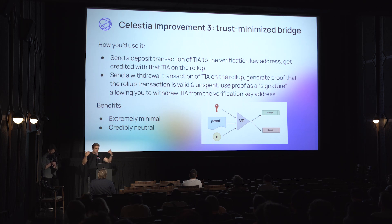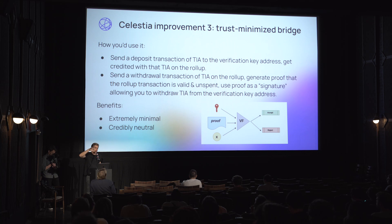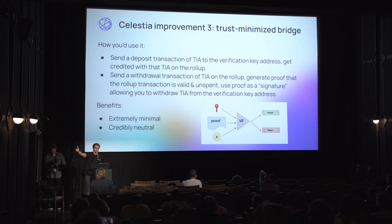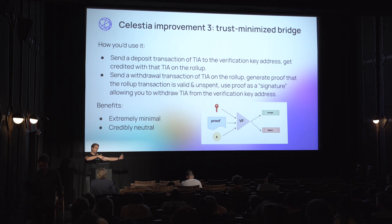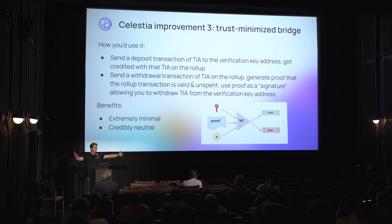In practice, you would send a deposit transaction of TIA to the wallet associated with the verification key, and the rollup would credit you Celestia tokens on the rollup. From there you can bridge wherever you want. When you want to bridge back down to Celestia, you send a withdrawal transaction on the ZK rollup — maybe it's a burn — then generate a proof that you did that and show it to Celestia, which gives you the right to transfer funds from the rollup address back to your address on Celestia. The beauty of this is that it's extremely minimal, could potentially be stateless, and it's credibly neutral — we're not enshrining anything, just adding new functionality to the protocol.